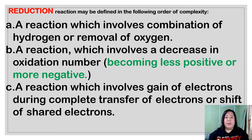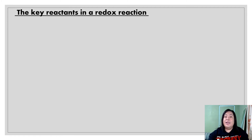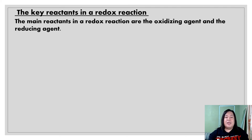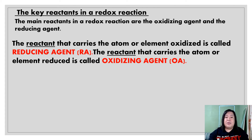These are the differences between reduction and oxidation. The key reactants in a redox reaction — take note, we are dealing with the reactants of a given chemical equation. The main reactants in a redox reaction are the oxidizing agent and the reducing agent. The reactant that carries the atom or element oxidized is the reducing agent, while the reactant that carries the atom or element reduced is called the oxidizing agent.